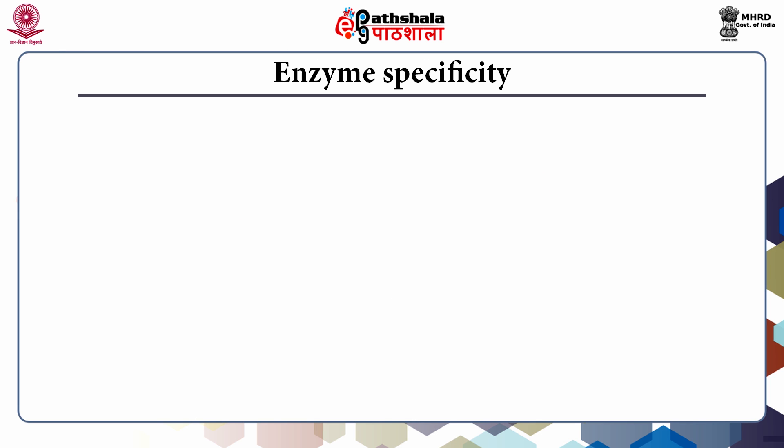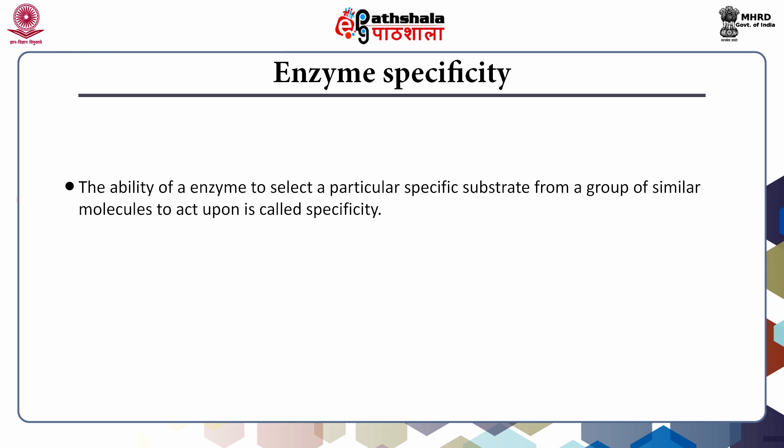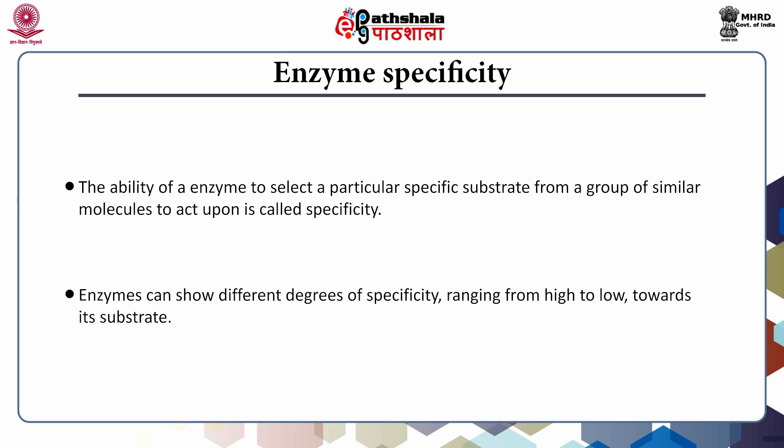Enzyme specificity — what do we mean by this term? Enzyme specificity means the ability of an enzyme to select a particular specific substrate from a group of similar molecules to act upon. This is a unique property of the enzyme. Enzymes can show different degrees of specificity ranging from high to low towards its particular substrate.